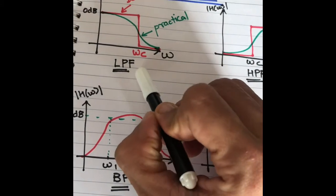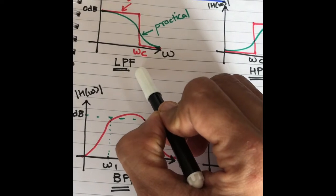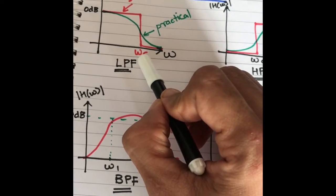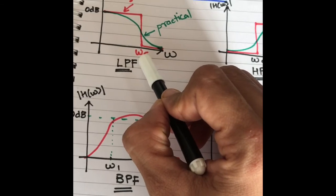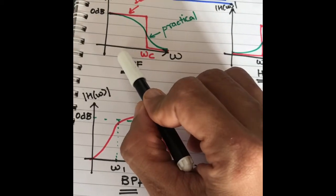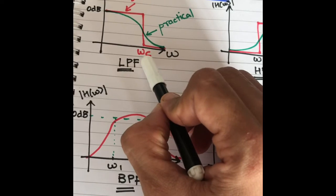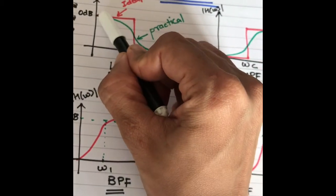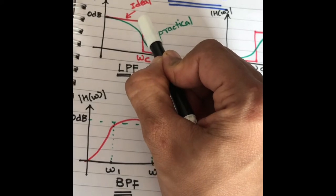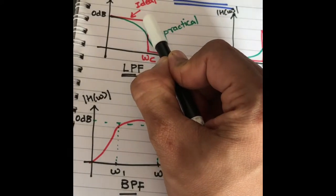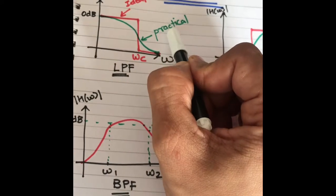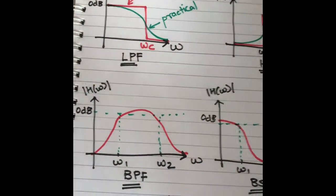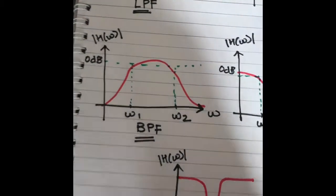Let us take a low pass filter as an example. A low pass filter will pass the input signal at frequencies which are below the cutoff frequency omega c. As you can see, the magnitude response is 0 dB, which means the output will be the same as the input.